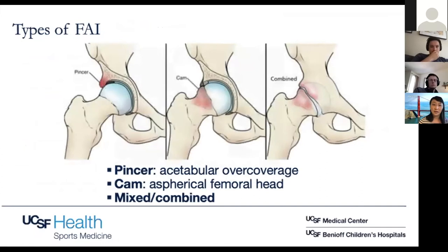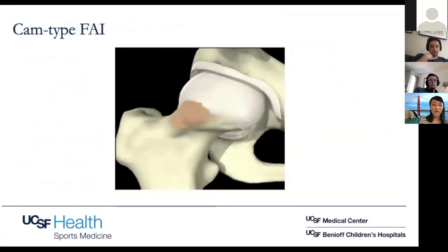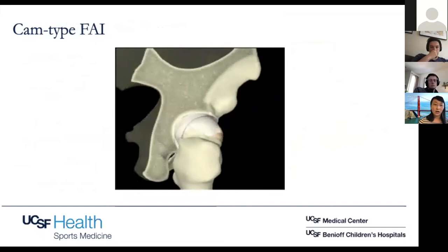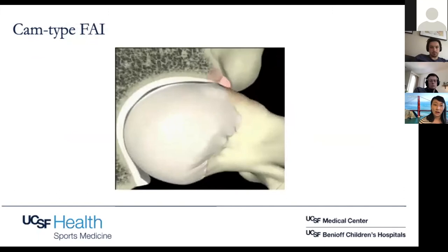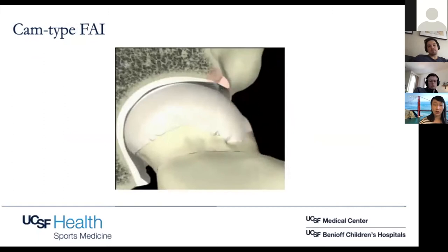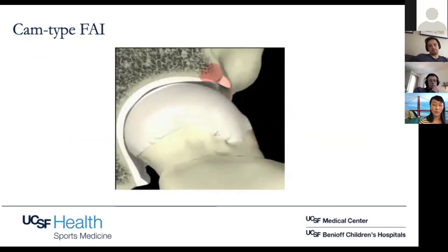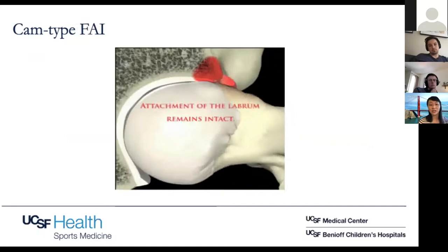Here are some animations showing the different types of FAI. Cam type is where you have bony overgrowth, usually at the anterior superior femoral head-neck junction. As a patient flexes their hip up into the extremes of flexion, they're bumping up against the labrum and can cause labral tears. Because the labrum is connected to the cartilage, that injury can propagate into the cartilage and that's how they get chondral injury as well. Cam type lesions are typically seen in younger male athletes.